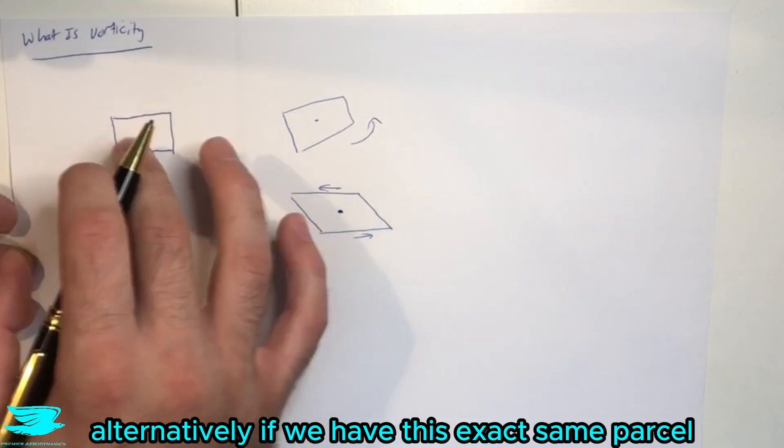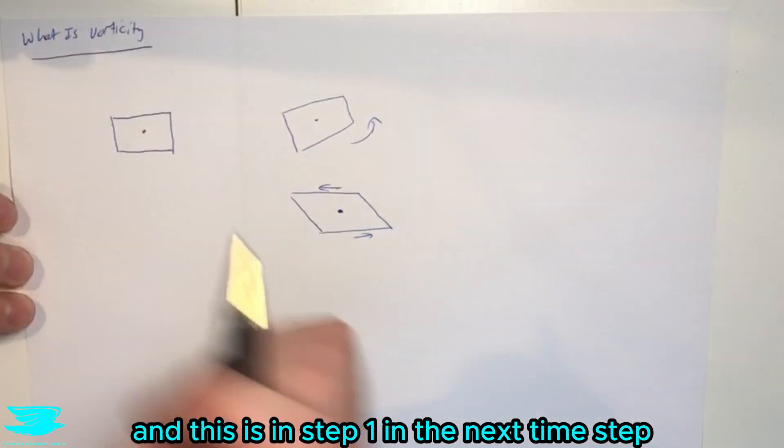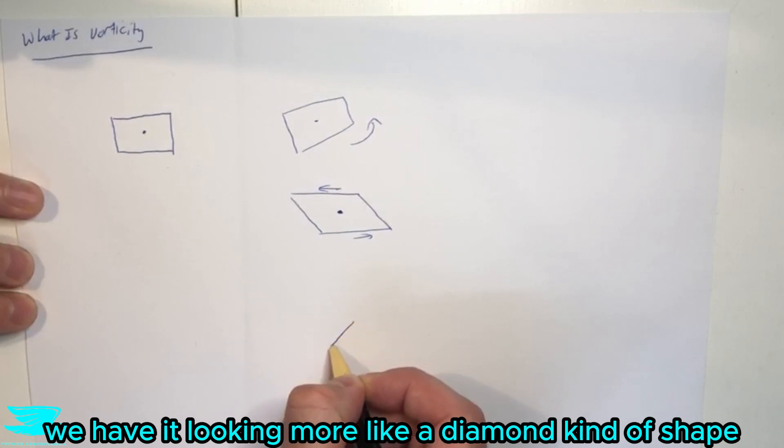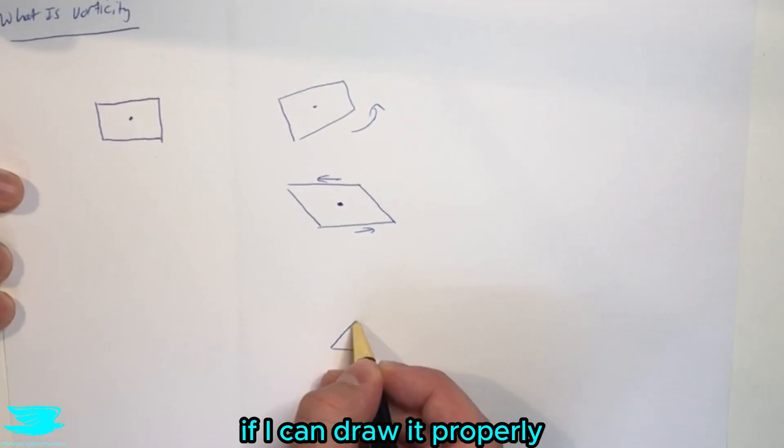Alternatively if we have this exact same parcel and this is in step one, in the next time step we have it looking more like a diamond kind of shape if I can draw it properly.